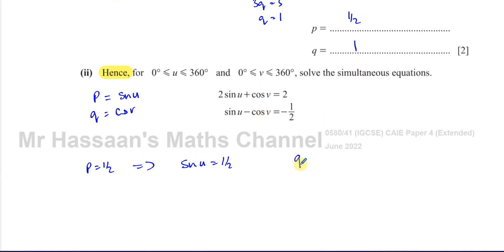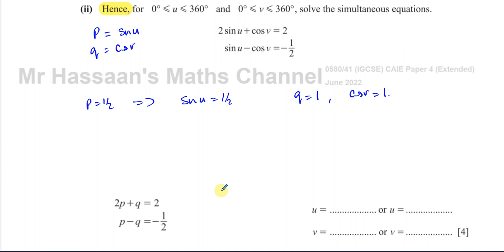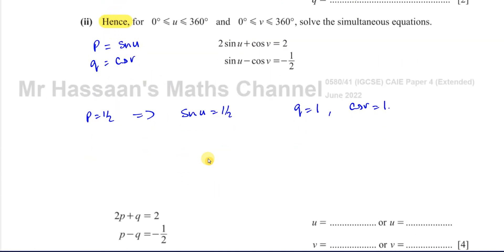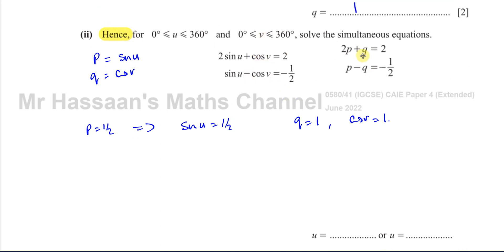So we need to solve this pair of equations between 0 and 360. They're almost the same, exactly the same thing, except p has been replaced by sine u and q by cosine v. So always look for whatever it says hence, look for that connection.